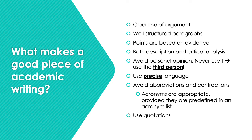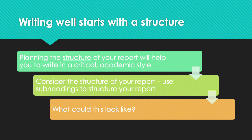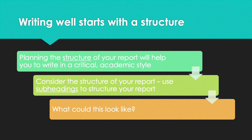This list is obviously by no means exhaustive but it's a good starting point to think about what makes good academic writing and how you can write well. Writing well really starts with a structure. Your essay or report won't be very good if you don't plan out the structure of your report first. So that's the first important thing to think about — your structure itself and how that will help you to write in a critical and academic style. Often the use of subheadings will really help you to structure your report. Pause the video and have a think about whether you want to make some notes about what this could look like.